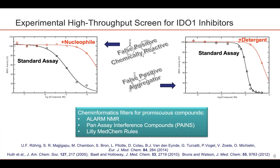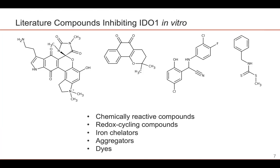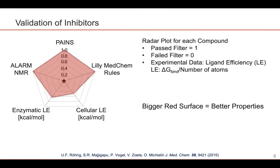There are a lot of these filters in the literature right now, and one of the most famous ones is probably the pan-assay interference compounds filter, or PAINS filter. With this experience in the back of our heads, we turned to have another look at the compounds that had been published in the literature as being IDO1 inhibitors. And a lot of these compounds looked suspicious to us as potentially being chemically reactive, redox cycling, iron chelators, aggregators, or dyes. So we decided to validate also those compounds.